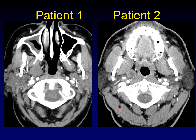These patients both have pleomorphic adenomas, but they arose from different sites. In patient two, this is an exophytic pleomorphic adenoma coming off of the deep lobe of the parotid and displacing the parapharyngeal fat. In patient one, this pleomorphic adenoma arose from rests of salivary tissue within the parapharyngeal fat and is displacing the parapharyngeal fat in all directions. It is separable from the underlying gland.